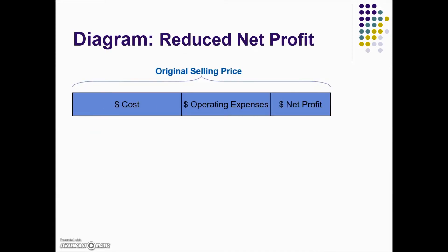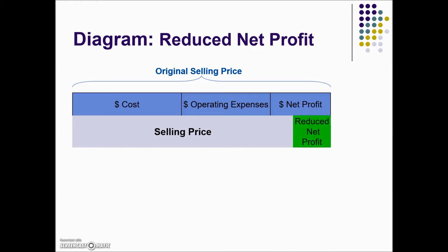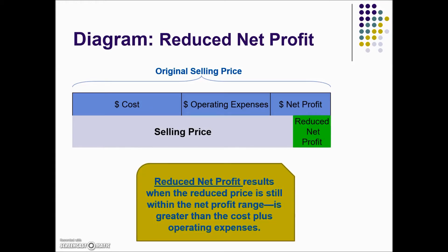Here's how the original selling price is derived: the cost plus the added operating expenses plus the added profit. A reduced net profit occurs when an item is marked down from the original price, but is still sold for more than the break-even point.